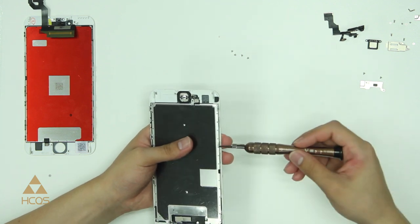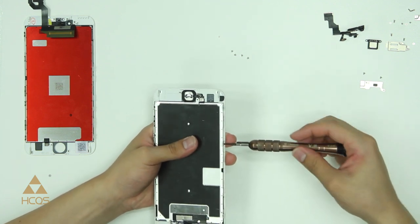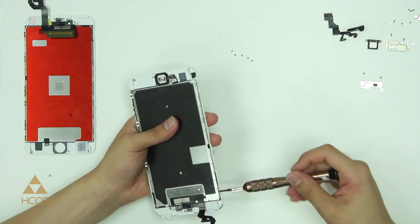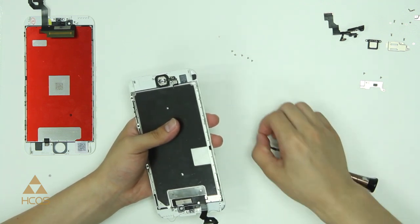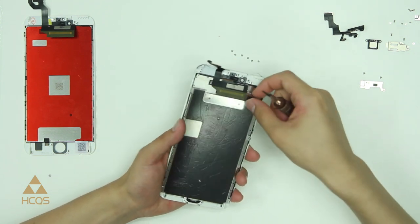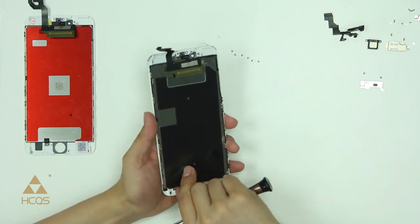Next thing we want to do is remove the shield from the camera. Once all the screws are out, you can remove the metal panel from behind the display.